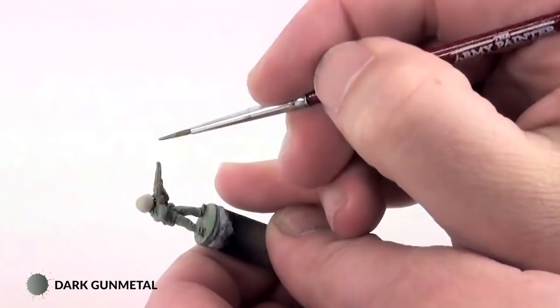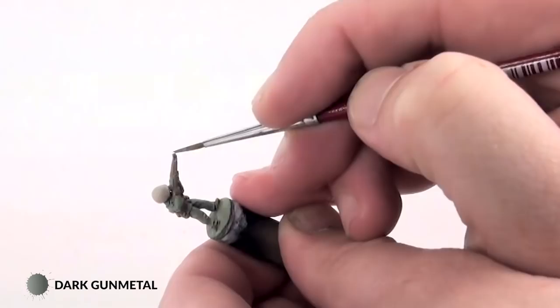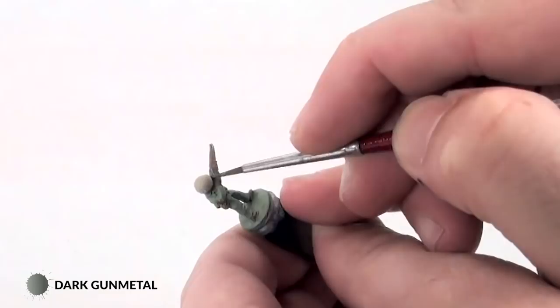And then, after I've done all that, I paint dark gun metal just on any metal items. For instance, the action of this marine's M1 Garand, as well as the barrel. Any metal items that aren't painted, I'll paint dark gun metal.